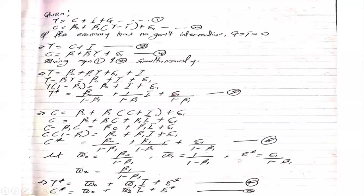Let's find the equilibrium level of consumption. When I look at equation four, it has an element of Y, so I substitute equation three (Y*) into equation four. After substitution and expanding the bracket, I group the C terms on the left-hand side. The common factor is C. Factoring C out and making C the subject by dividing by (1 minus beta-one), I get C* — the equilibrium level of consumption. The stochastic error term has an element of the parameter, confirming endogeneity.